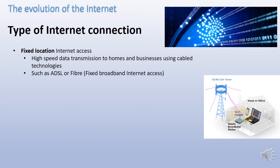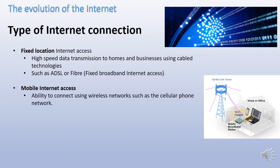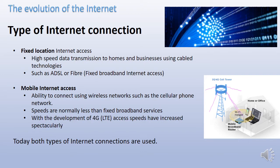ADSL is obviously a lot slower than fiber, but it was still a lot faster than the first internet connections that came about, which used the old telephone system in those days. Then we have mobile internet access. This is when you use a wireless network like the cell phone network to connect to the internet. The picture shows a cell phone tower which would connect to a Wi-Fi hotspot and allow you to have a home or an office network. The speeds are normally less than fixed broadband services, but with the development of 4G or LTE, access speeds have increased spectacularly, and today both types of internet connections are used.